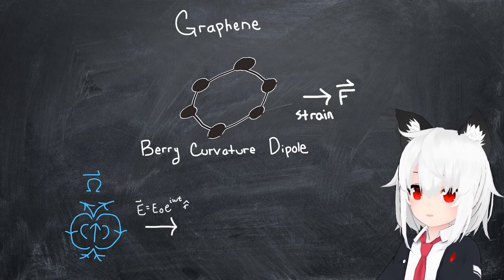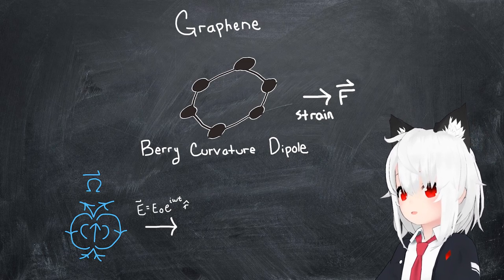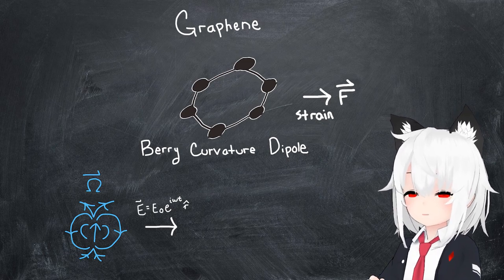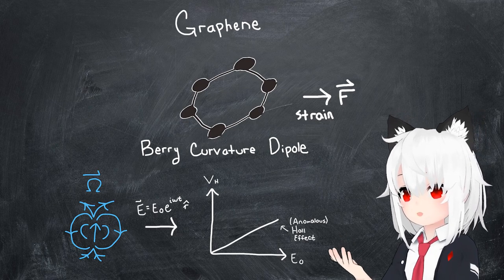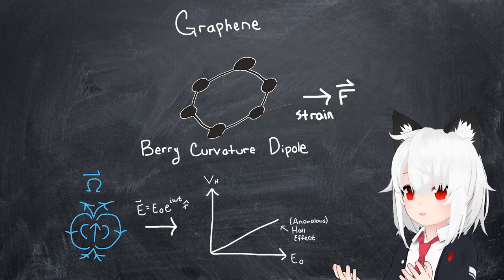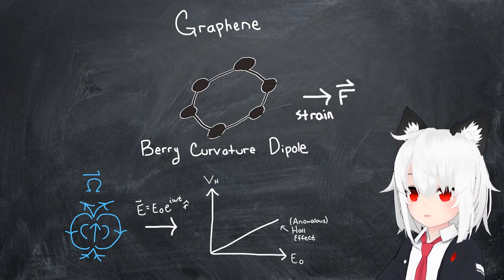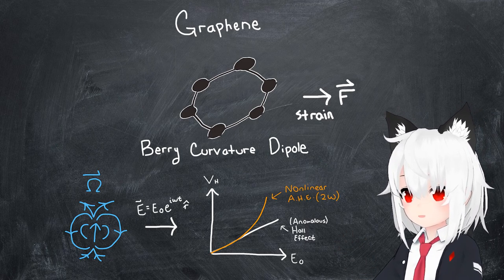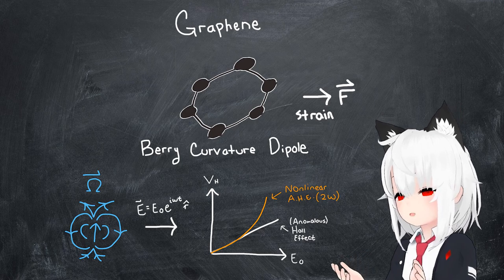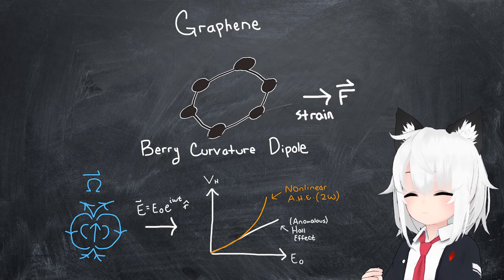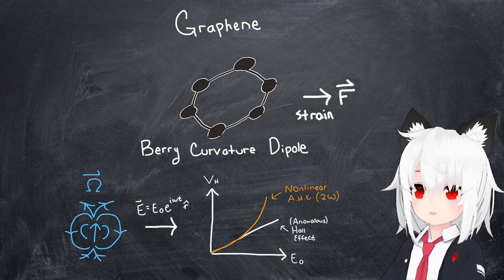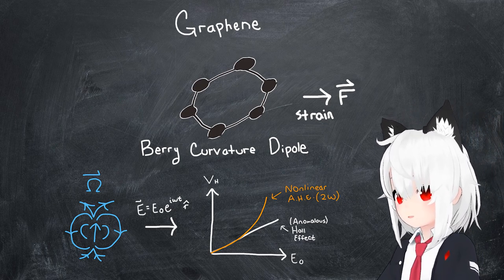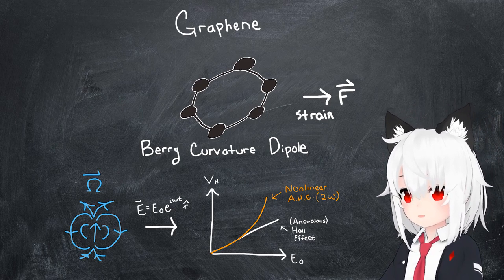In particular, in the presence of an oscillating in-plane electric field, this Berry curvature dipole can be shown not only to give rise to a non-zero Hall voltage, as expected since the Berry curvature emulates a magnetic field, but also to a somewhat unusual non-linear Hall effect, defined at twice the input electric field frequency. This is interesting and ultimately gives us something to look for if we wanted to test our predictions about this Berry curvature.